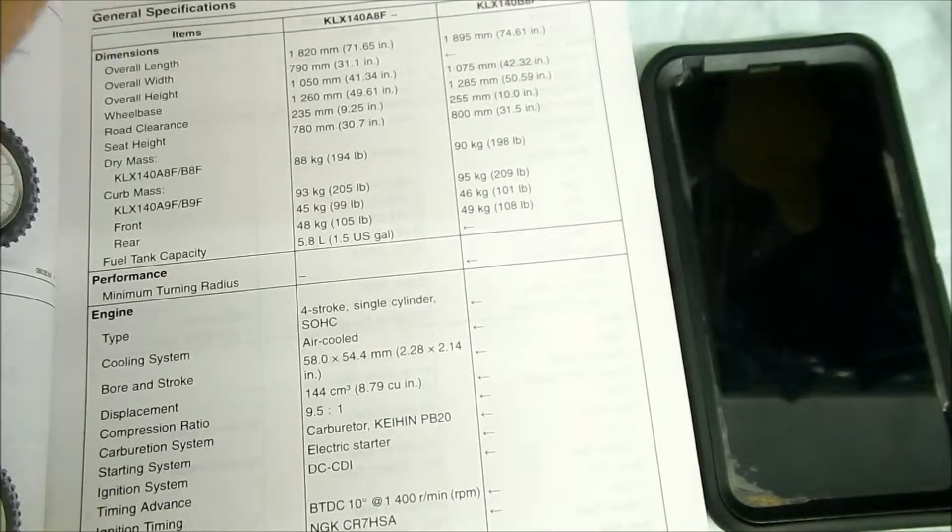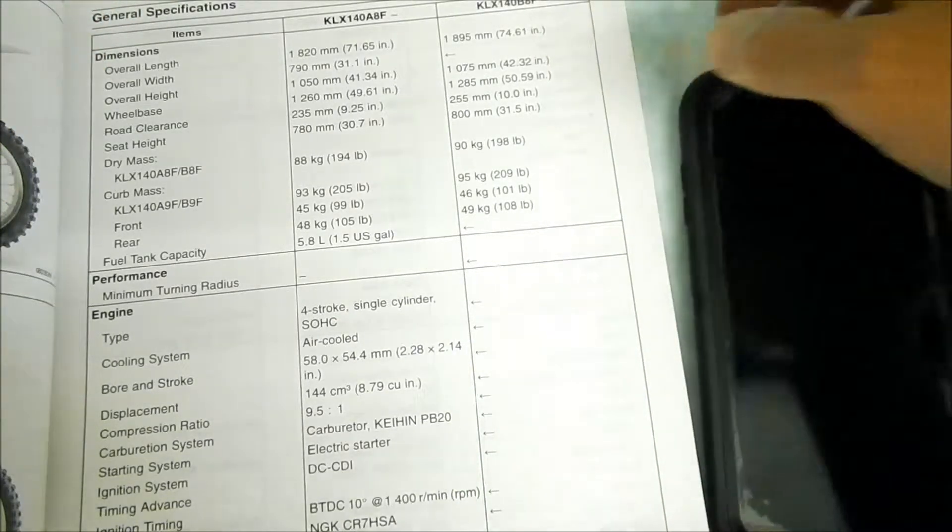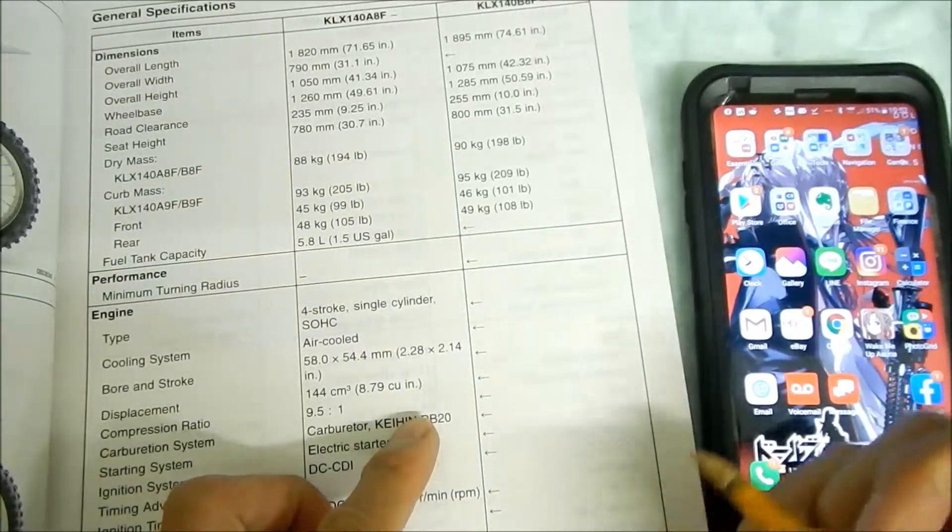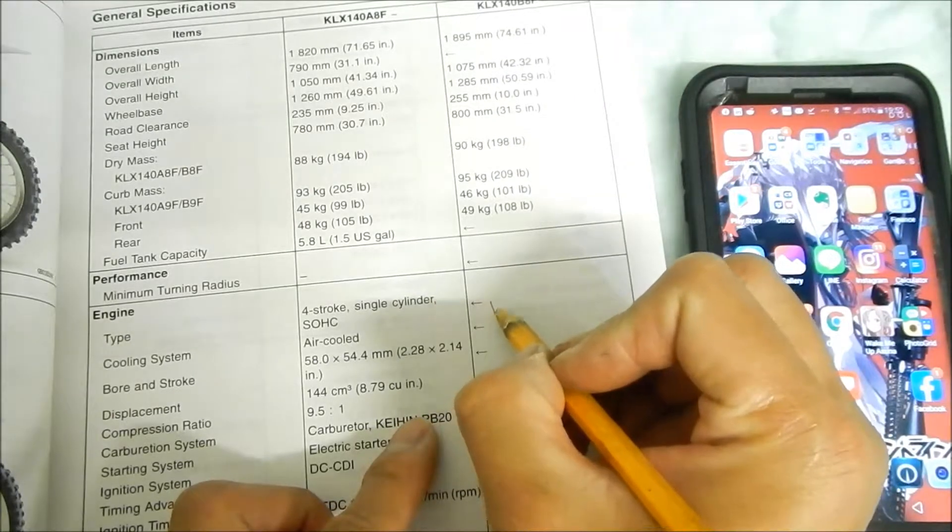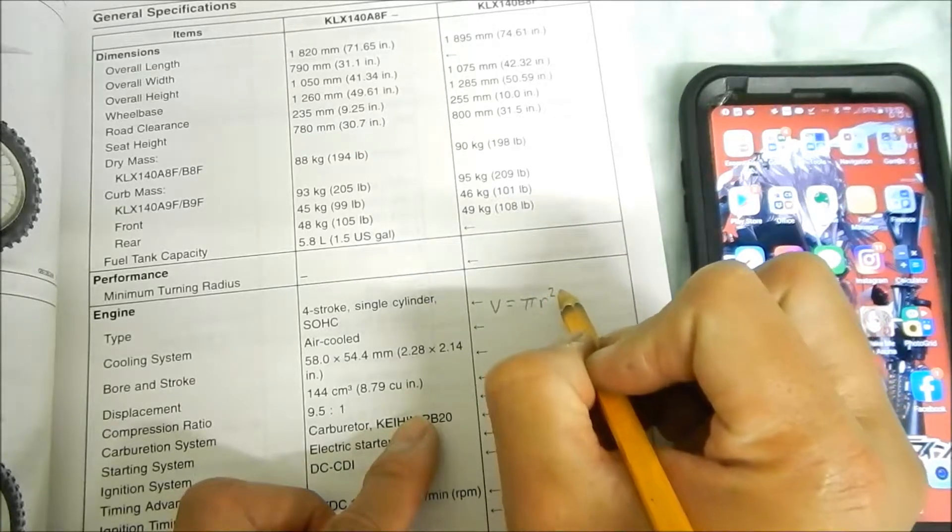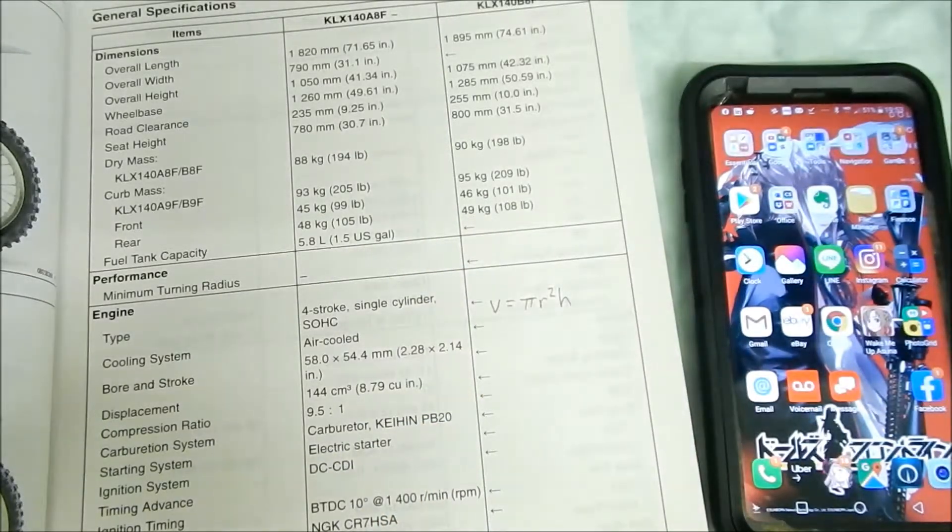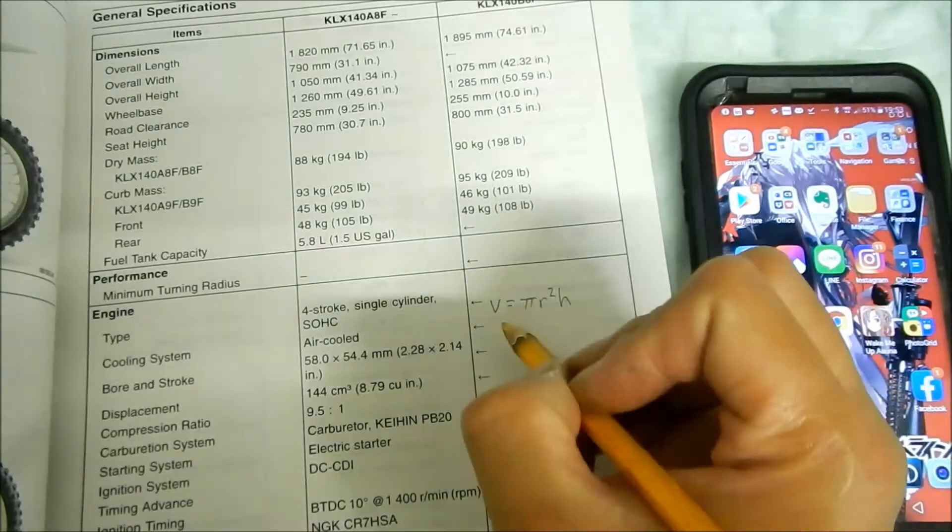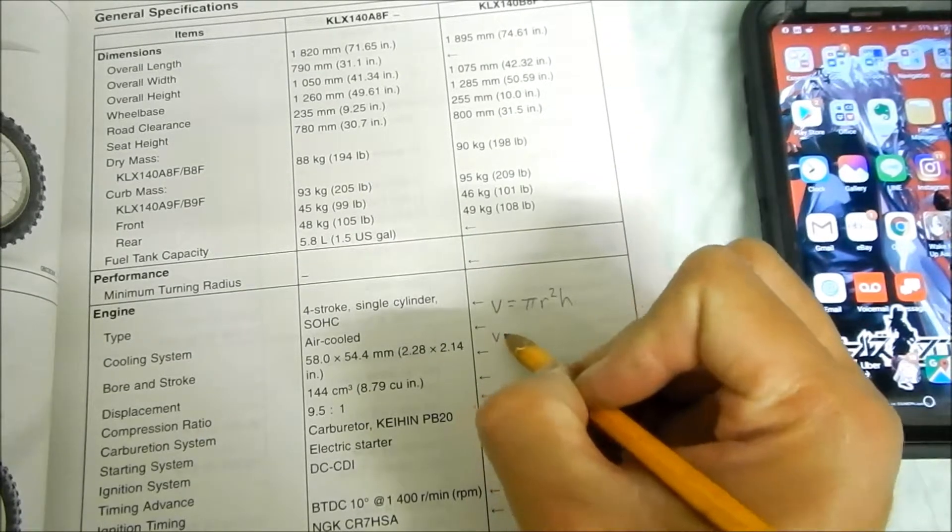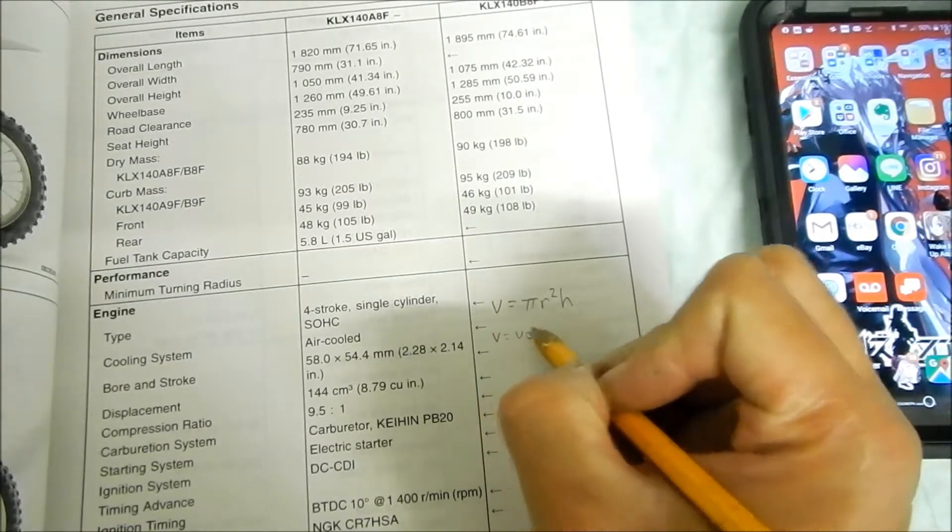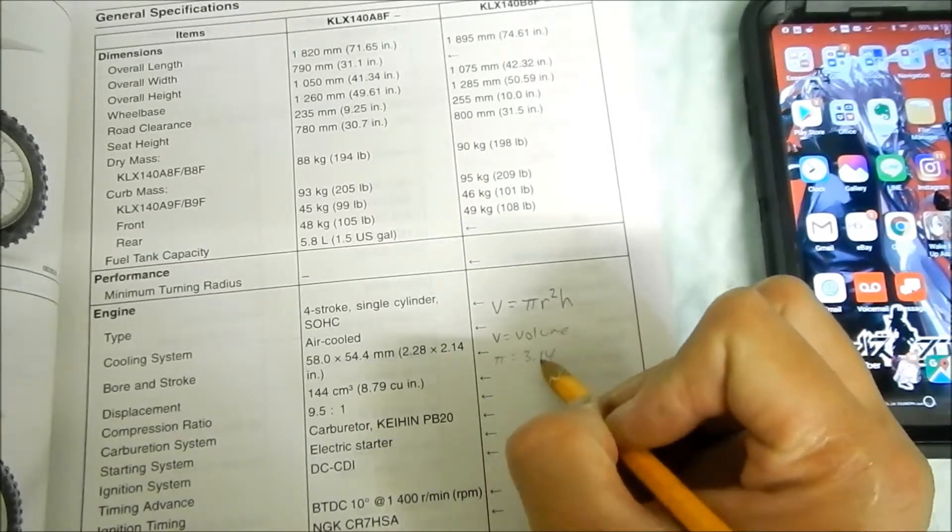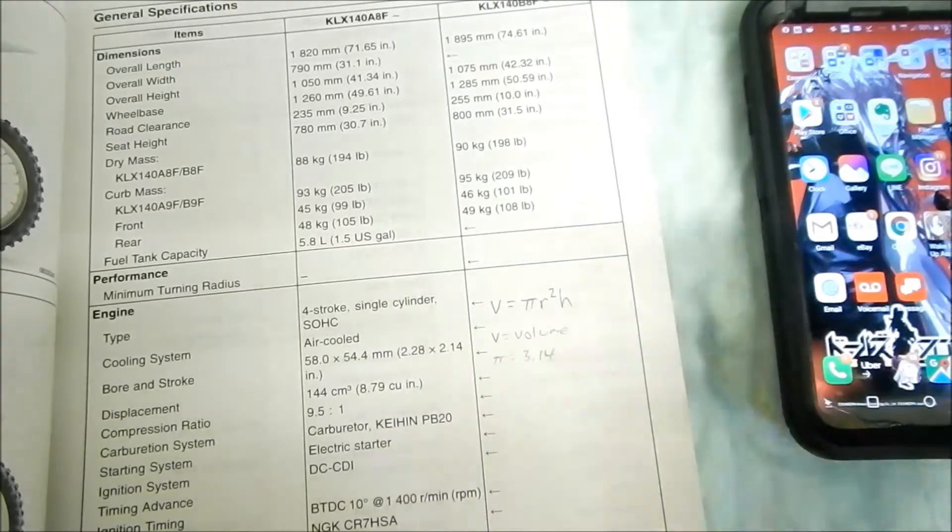All right, so the formula I just looked it up right now on Google. The formula for volume is V equals pi r squared times the height. So V equals volume, obviously. We're getting all scientific here, doing the whole science bit here. V equals volume, pi equals 3.14 approximately. It would be best if I had a scientific calculator, I don't.